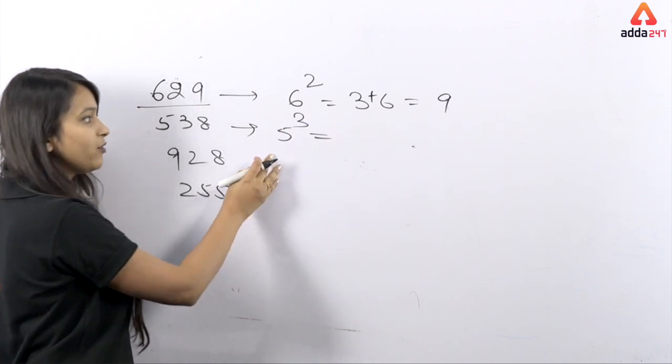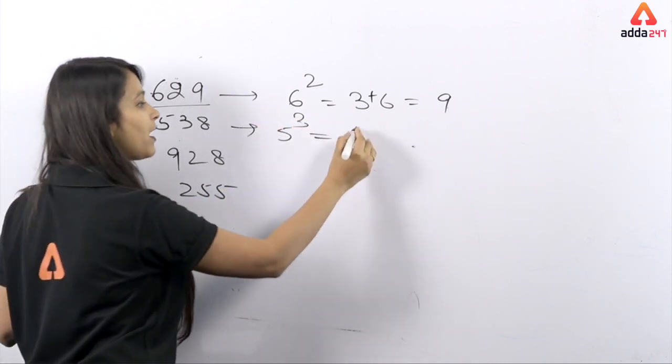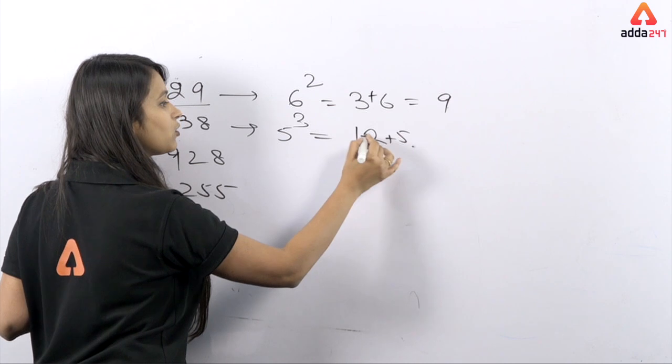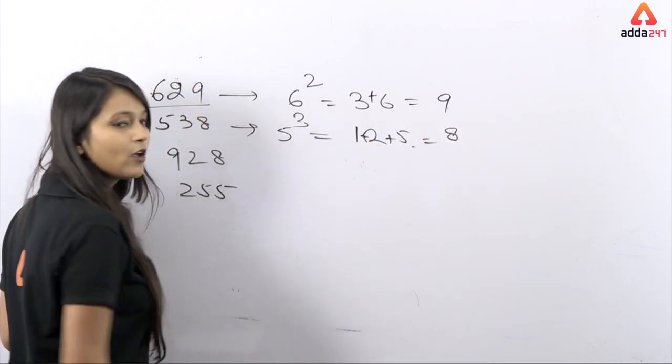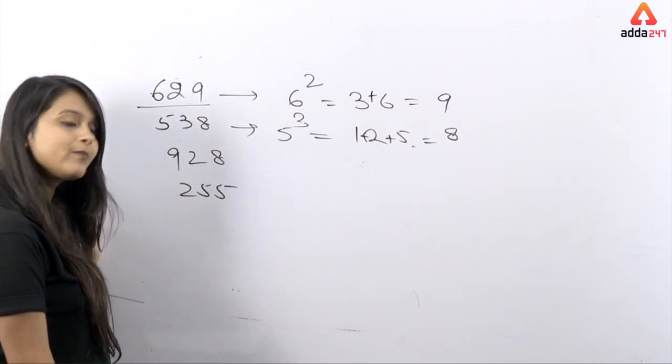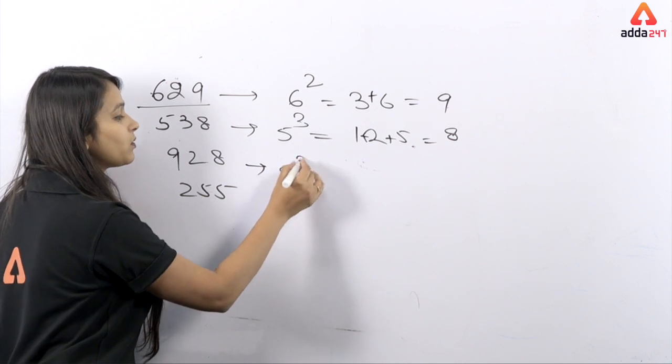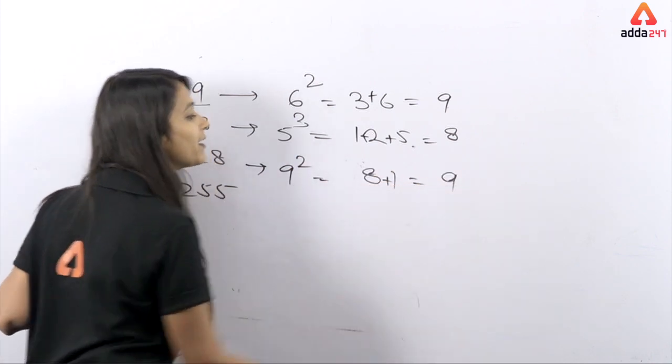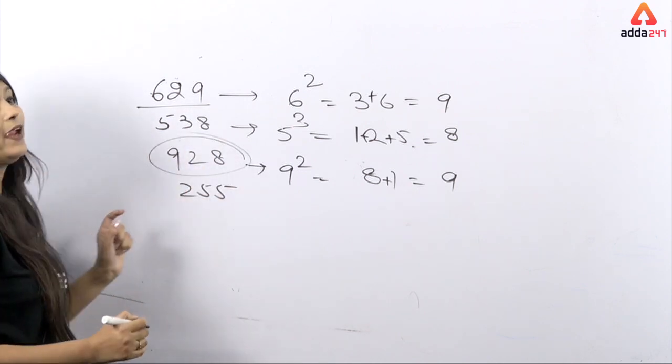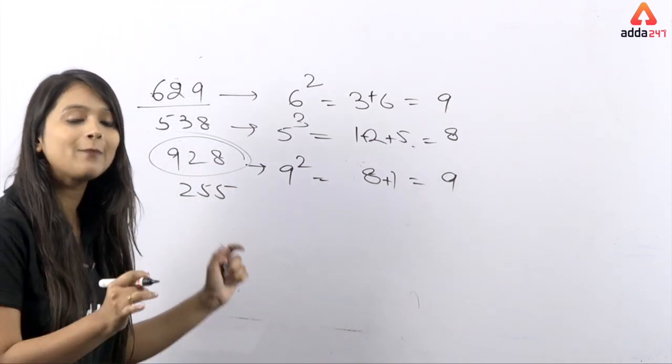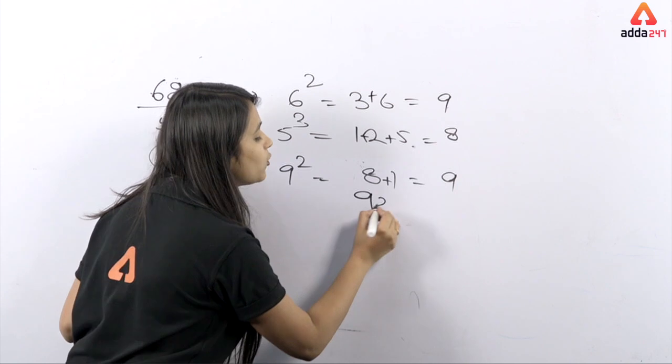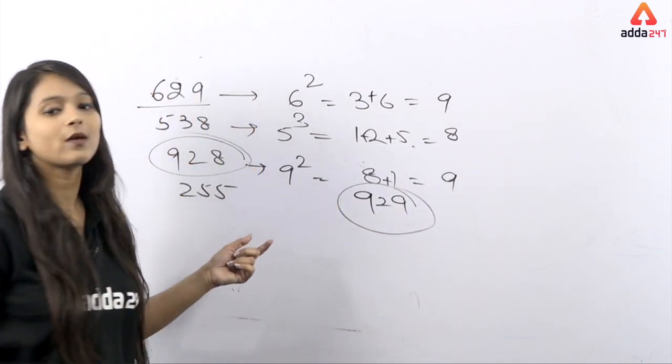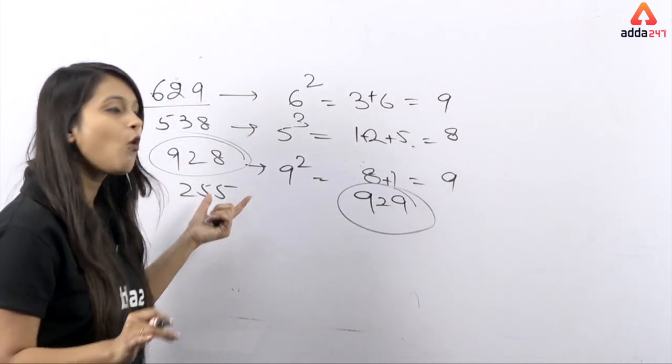5 ka cube kitna hota hai? 5 cubed is 125. So 5 to the power 3. 1 plus 2 plus 5 equals 8. 9 ki power 2 kitna hai? 81. 8 plus 1 kitna hai? 9. Lekin kya dekh rahe hai yaha pe? 8 dekh rahe but yaha pe kya hona chahiye tha? 9 hona chahiye tha.